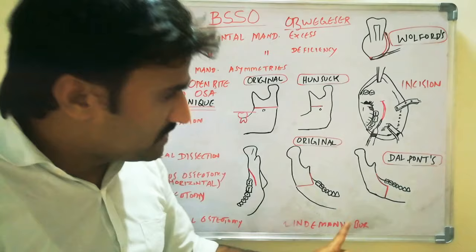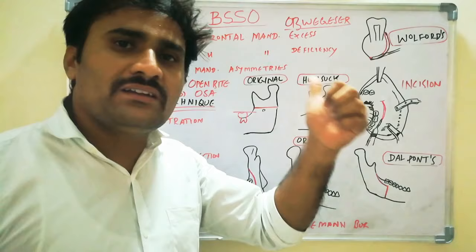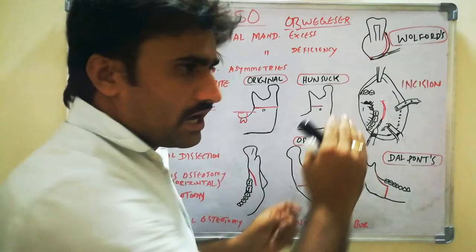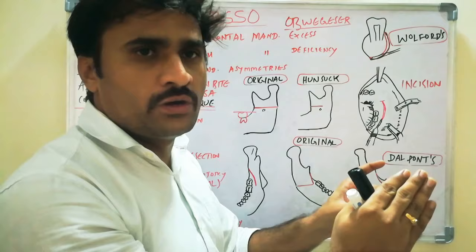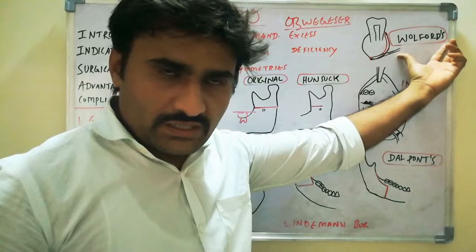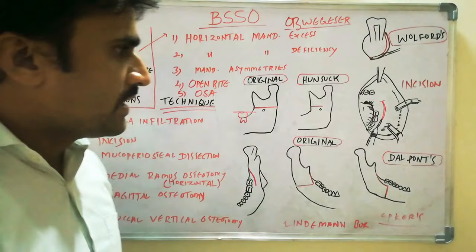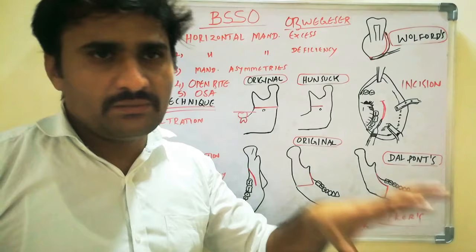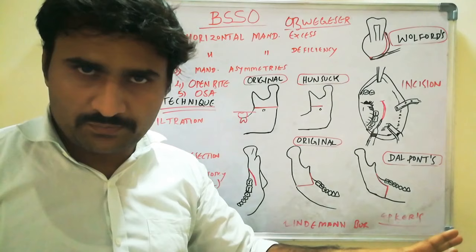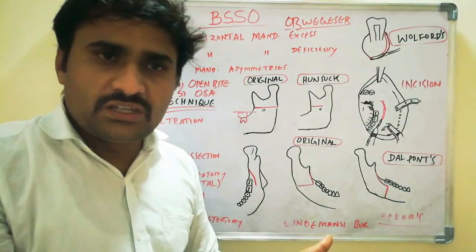There are four main modifications of BSSO. Hunsuck modification and Dal Pont modification have been discussed. The third is the Wolford modification: when cutting the lower border of the mandible, the cut should include both buccal cortical plate and lingual cortical plate to avoid unfavorable fractures during splitting. The fourth is Epker's modification, which emphasizes minimal periosteal stripping and minimal muscle stripping during dissection, because excessive periosteal stripping compromises blood supply to the segments, resulting in necrosis or non-union.